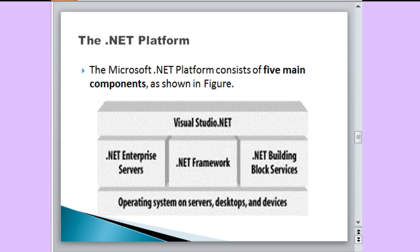First, we know that .NET is a product of Microsoft. The Microsoft .NET platform consists of five main components. Here you can see: the lower layer is the operating system. The middle layer has three components: .NET Enterprise Servers, and .NET Framework — that is very important — and .NET Building Block Services. At the top of these layers, there is Visual Studio .NET. Let's now discuss all five components one by one.